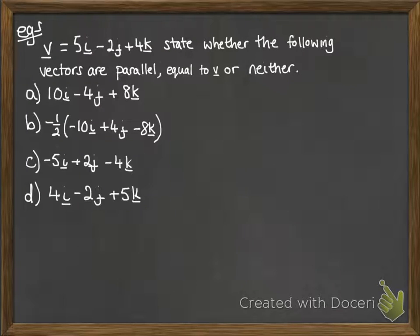And here's our example question. We've got this vector V, and we need to figure out if these following vectors are parallel, equal, or neither in relation to V. So have a little look down the list and see if you can spot what each one would be.